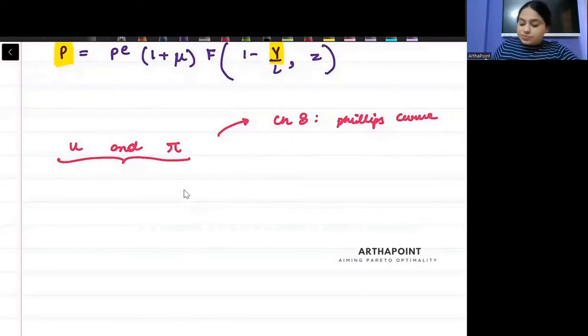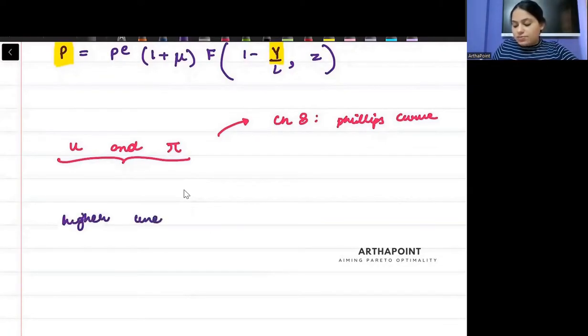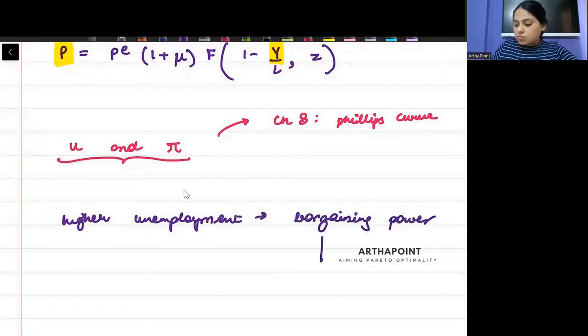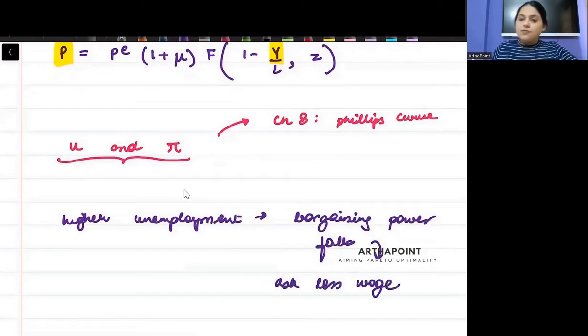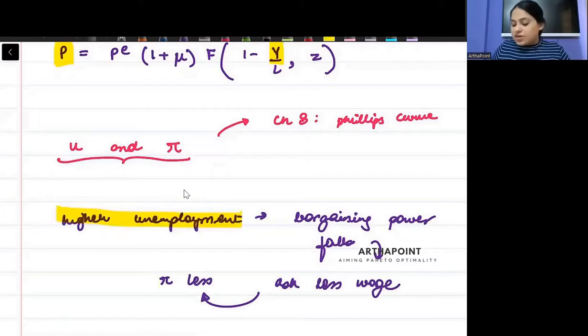See, when there is higher unemployment, then the bargaining power falls. People are not able to bargain. When bargaining power falls, they can only ask for less wage. When wages will be less, then cost of production is less, so price of the product can be less. So inflation will be less. High unemployment is always related to low inflation.